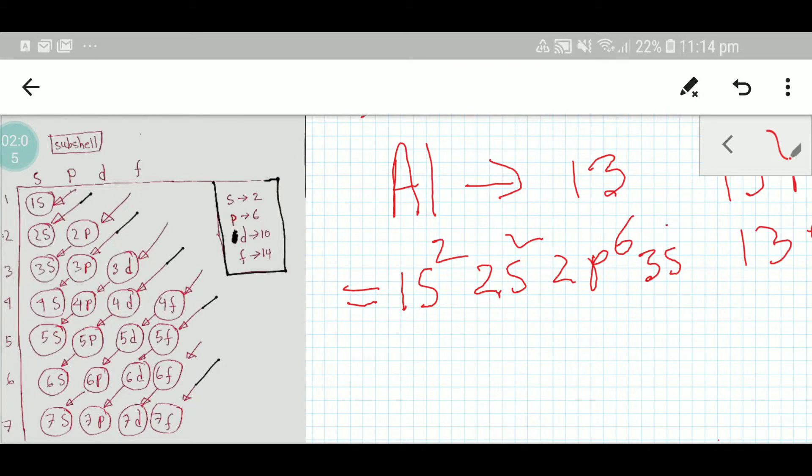3s2, that is 12 electrons. After 3s we have to consider 3p, so we write 3p and place 1 electron here.